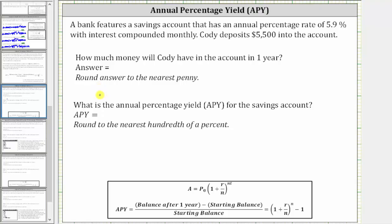So the balance after one year, A, is equal to P sub zero, the starting amount of $5,500, times the quantity one plus r divided by n, where r is the annual interest rate as a decimal, and n is the number of compounds per year. 5.9% as a decimal is 0.059, and the number of compounds per year is 12 because the interest is compounded monthly, and there are 12 months a year.